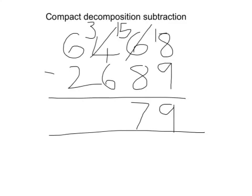We continue this process until we get to the end. 3 minus 6 cannot do, so we exchange our 6 to a 5 and a 1. 13 subtract 6 gives us an answer of 7.